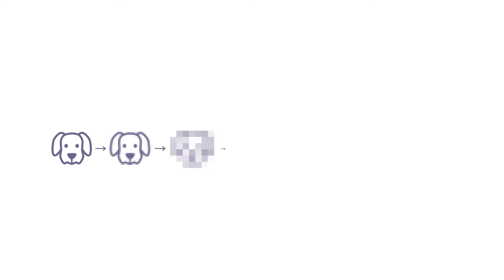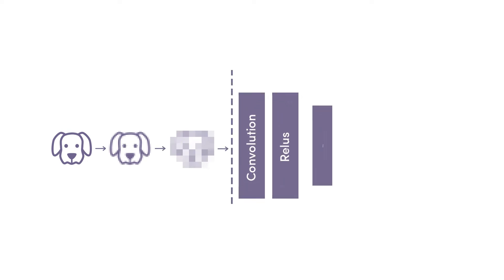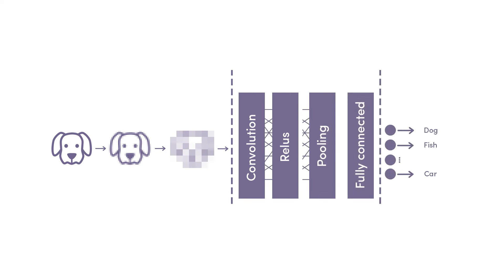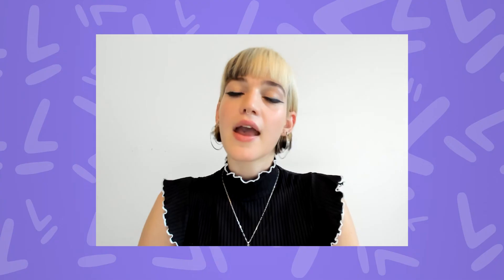An image classifier takes the numerical pixel values of an image, passes it through its CNN, and gets a final output. As explained earlier, this output can be a single class or a probability of classes that best describes the image. Inside the hidden layers of the CNN is where the magic happens. On the journey from inputting a picture to outputting a class, each CNN layer type performs a specific task.